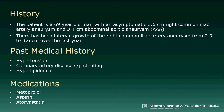This patient is a 69-year-old gentleman with an asymptomatic 3.6-centimeter right common iliac artery aneurysm and a 3.4-centimeter abdominal aortic aneurysm. There has been interval growth of the right common iliac artery aneurysm from 2.9 centimeters to 3.6 centimeters over the last year.